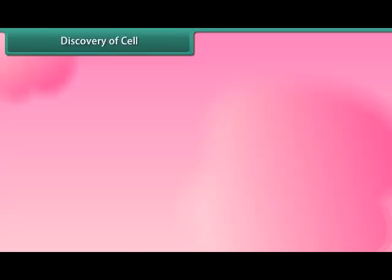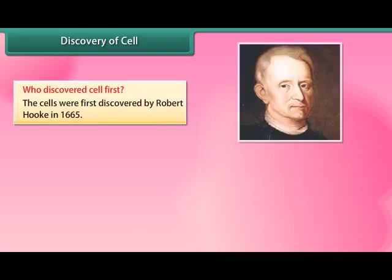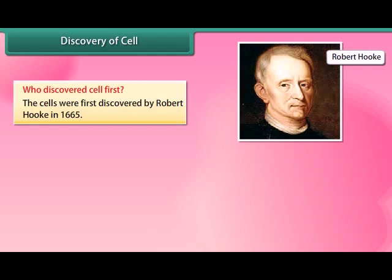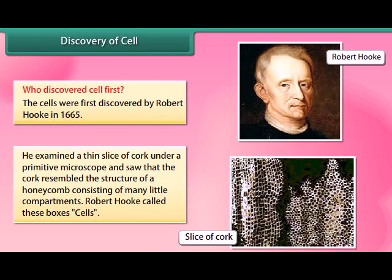Who discovered the cell first? Cells were first discovered by Robert Hooke in 1665. He examined a thin slice of cork under a primitive microscope and saw that it resembled the structure of a honeycomb, consisting of many little compartments. Robert Hooke called these boxes 'cells'.